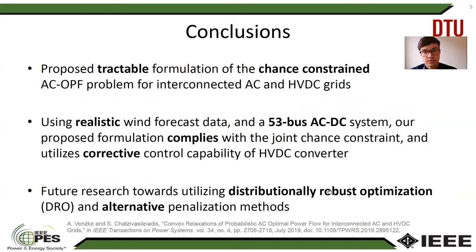To conclude, in our paper we proposed a tractable formulation of the chance-constrained AC OPF problem for interconnected AC and HVDC grids. Using realistic wind forecast data and a 53-bus AC/DC system, our proposed formulation achieves compliance with the joint chance constraint and is also able to utilize the corrective control capability of the HVDC converter. Our future research is directed towards utilizing distributionally robust optimization and alternative penalization methods.